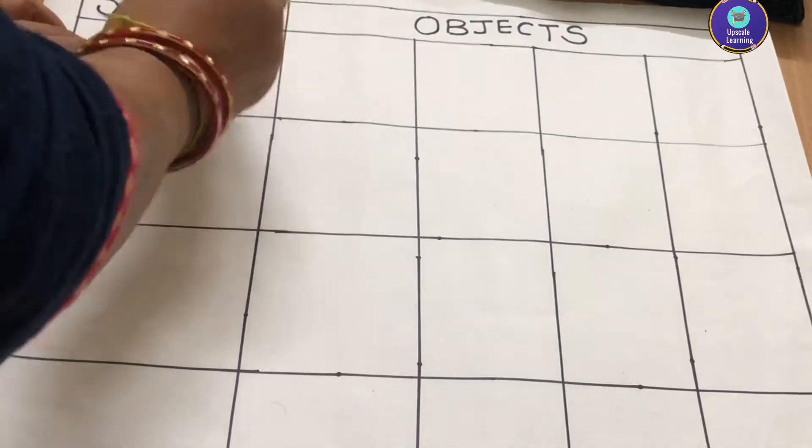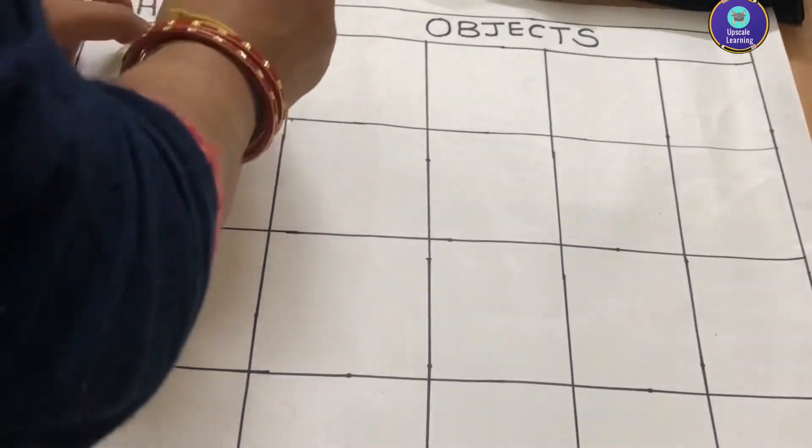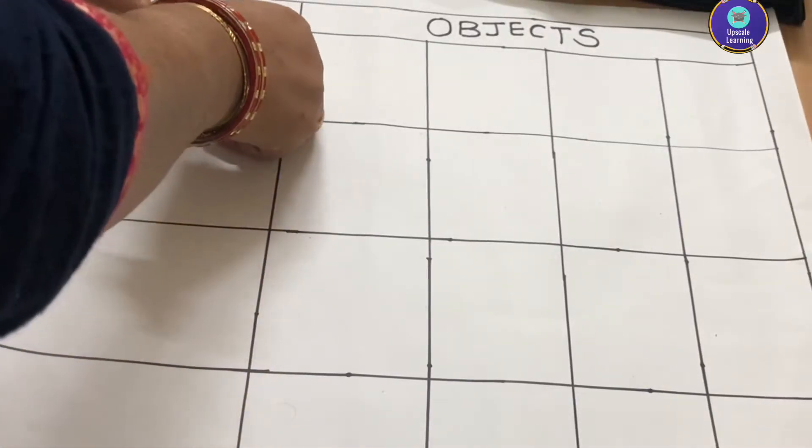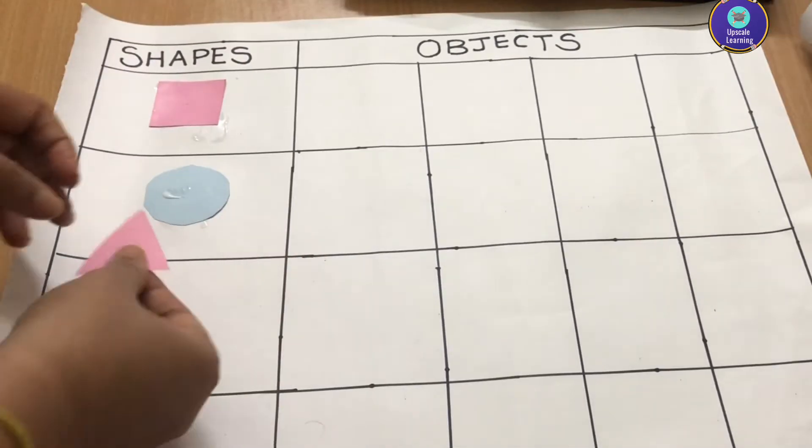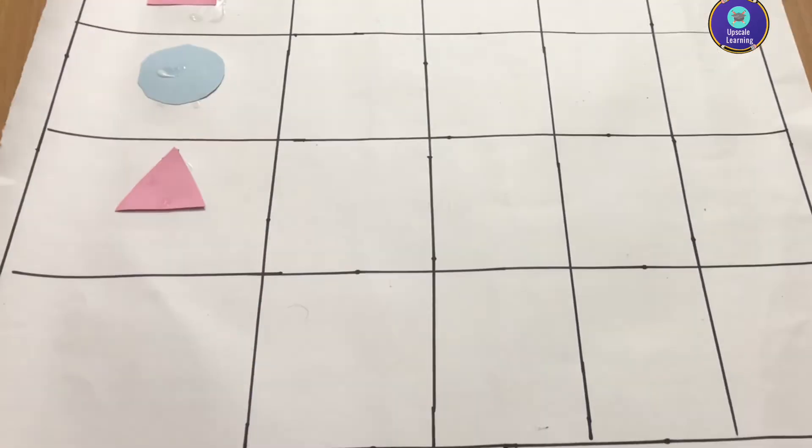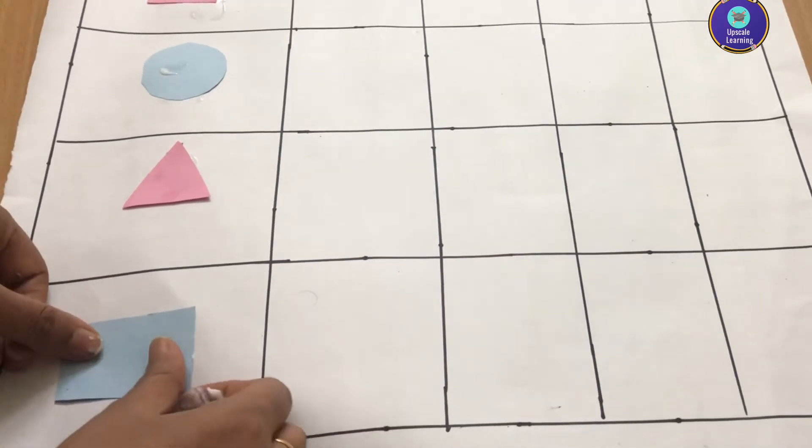First let us take all the different shapes: square, circle, triangle and a rectangle.